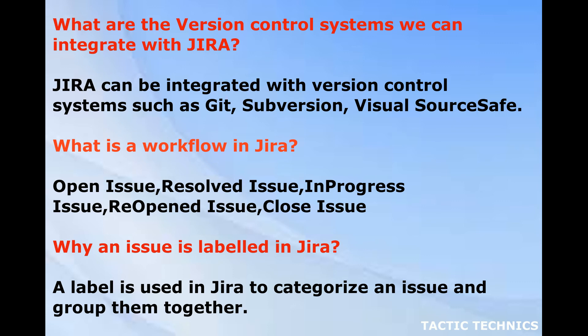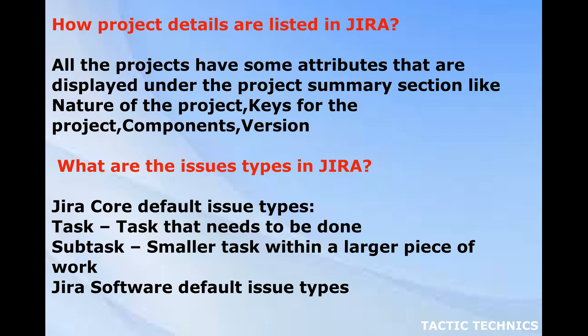Why is an issue labeled in Jira? A label is used in Jira to categorize an issue and group them together. How are project details listed in Jira? All projects have some attributes that are displayed under the project summary section, such as the nature of the project, keys for the project, components, and version.